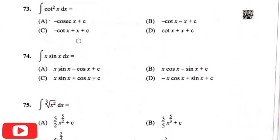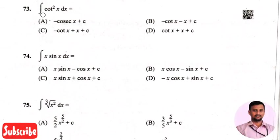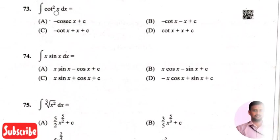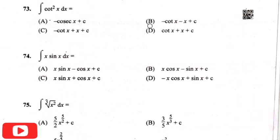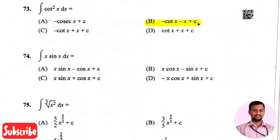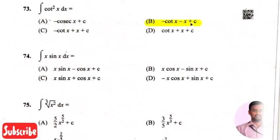The next question: the integration of cot squared x times dx is? The right answer is option 2, that is minus cot x minus x plus c.